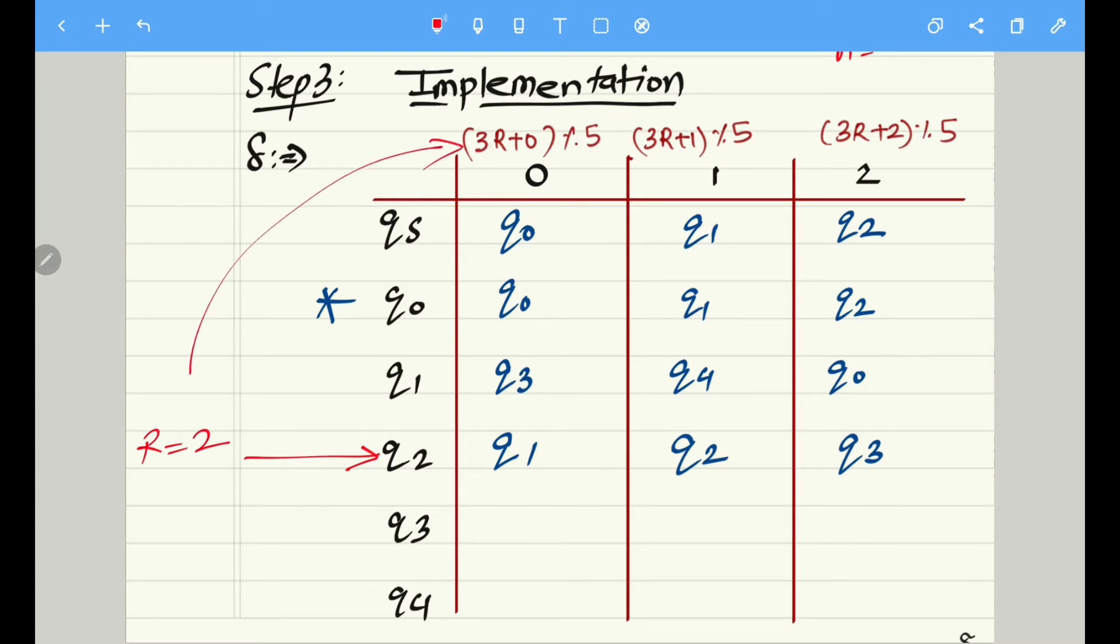If we are talking about Q2, R is nothing but 2. If I substitute this value in this formula, for 0 input we get 3 into 2, that is 6. 6 plus 0 is 6 only. 6 mod 5 is nothing but 1, that is what we have written over here, that is Q1. Similarly for input 1, it becomes 6 plus 1, that is 7. 7 mod 5 is 2, which corresponds to the state Q2. And finally for input 2, it becomes 6 plus 2, that is 8. 8 mod 5 gives remainder 3, which corresponds to Q3.